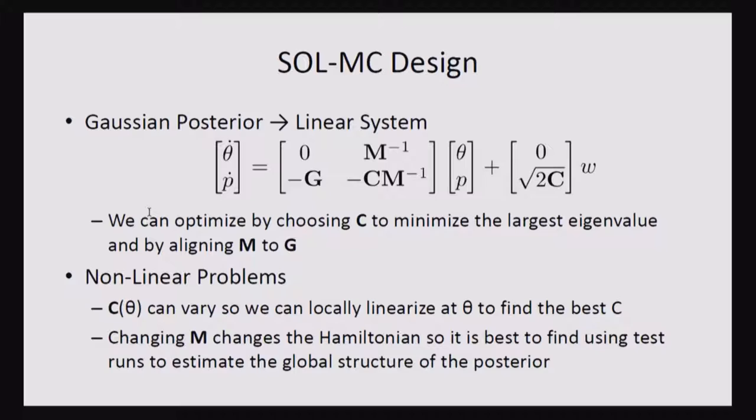And so when designing the system, the first thing we can look at is where we can solve this exactly. So a Gaussian system with a Gaussian posterior produces a linear system. And so then we can look at the structure of this matrix and minimize the largest eigenvalue to reduce the convergence by finding C.